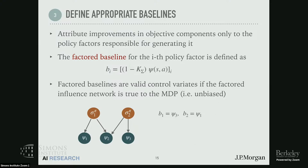The key insight in leveraging the structure is that we want to attribute the improvements in objective components only to the policy factors that are responsible for generating them. For example, if under some policy we observe a huge improvement in the psi_1 component, that should only be attributed back to the first policy factor and not the second. Attributing it to the second policy factor only adds noise to its update and increases variance. The way we achieve this is to propose a factored baseline, where the baseline for the ith policy factor is of the form shown here, where K is the bi-adjacency matrix of the graph. It essentially takes out the components of the objective that are not linked to that particular policy factor in the network. We prove that factored baselines are indeed valid control variates if the factored influence network is unbiased — that is, you have perfect knowledge and it is true to the MDP.